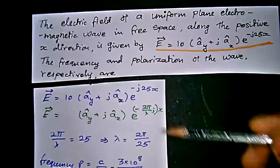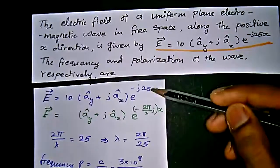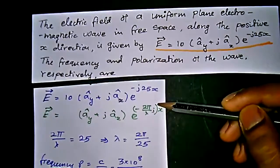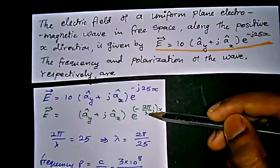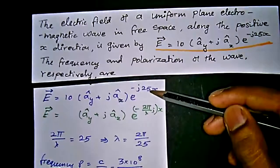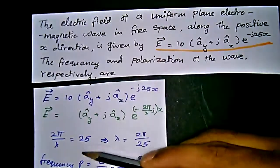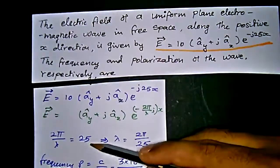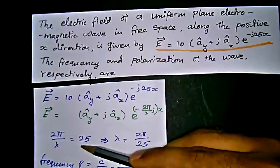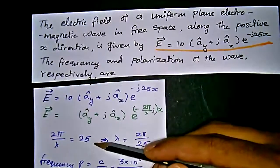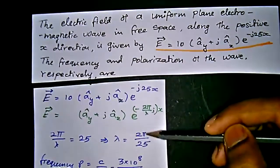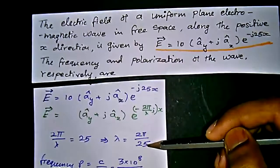Comparing these two equations, we can say that 2π/λ is equal to 25. So rewriting that: 2π/λ = 25, which gives us λ equal to 2π/25.